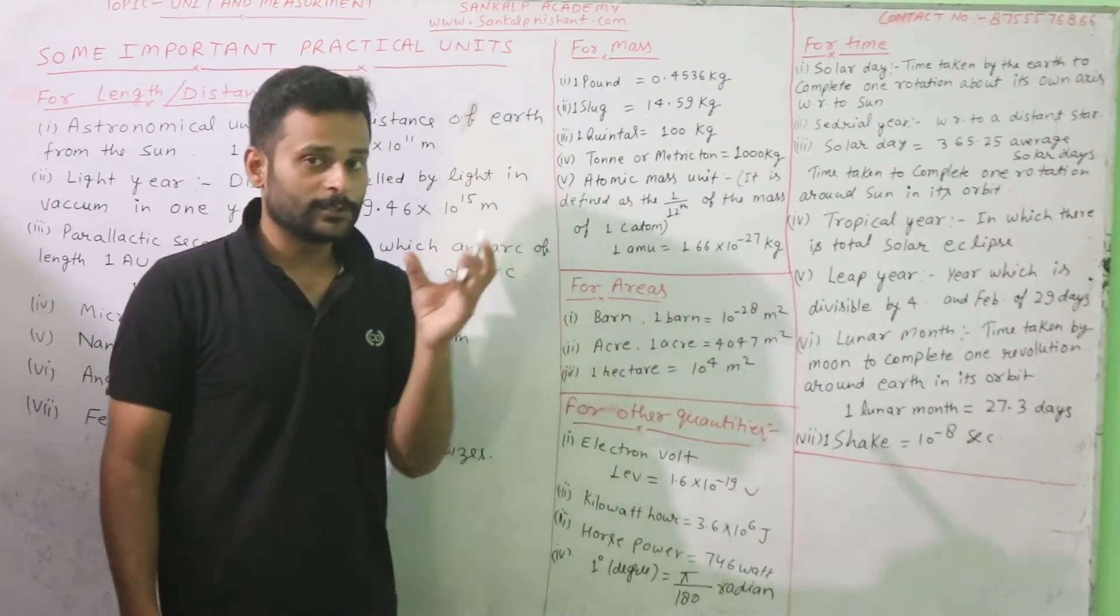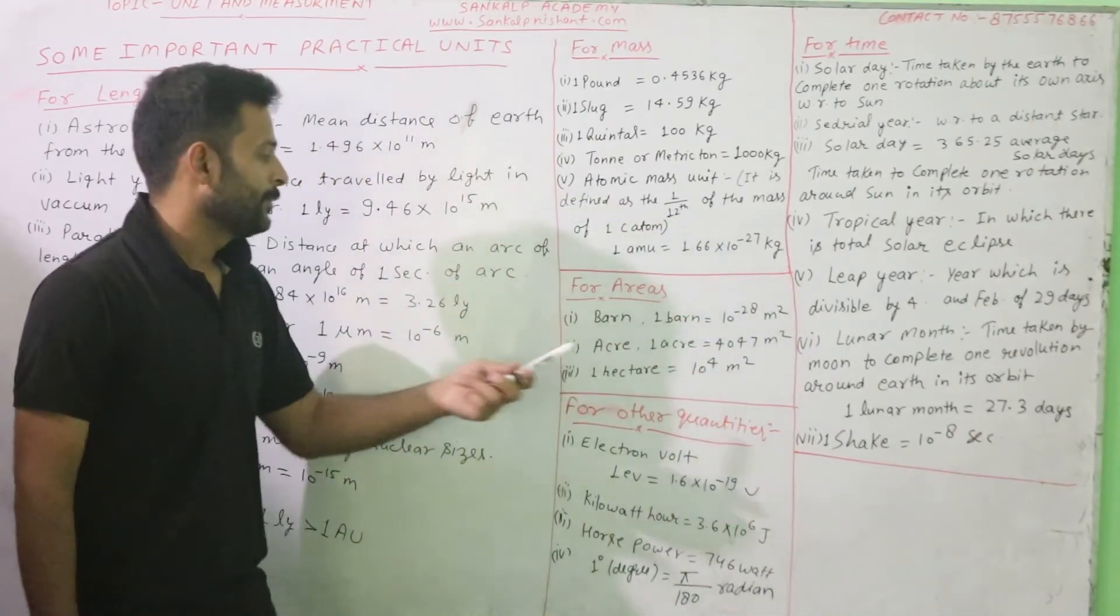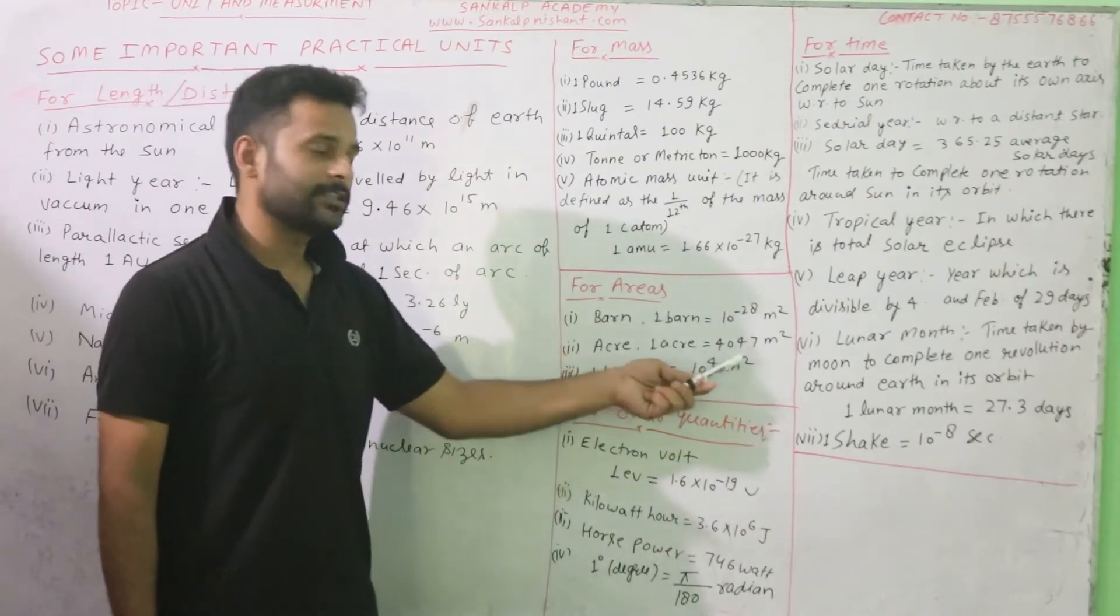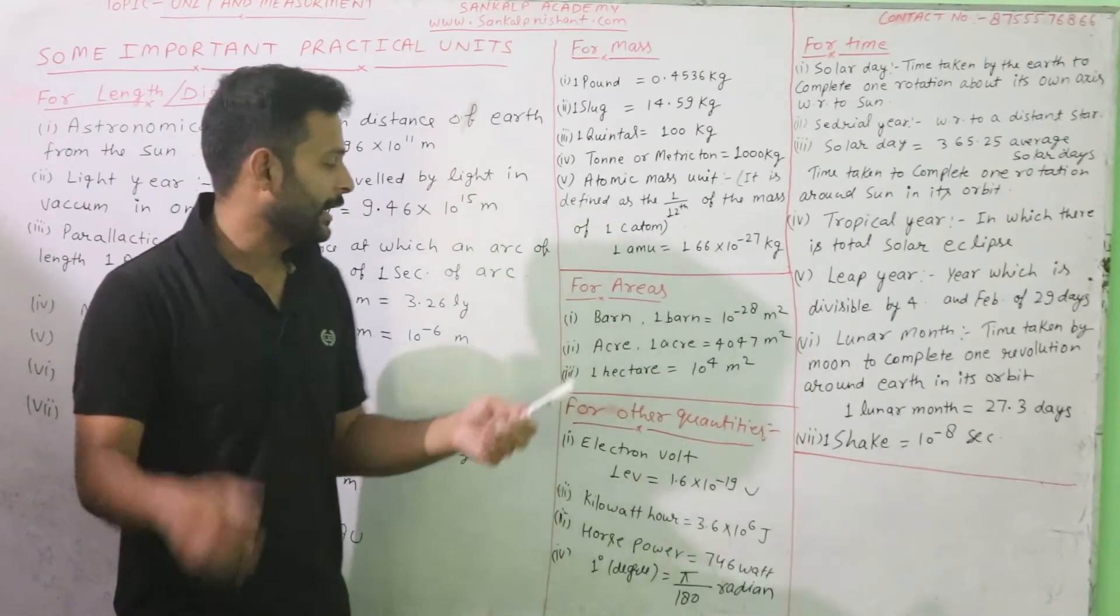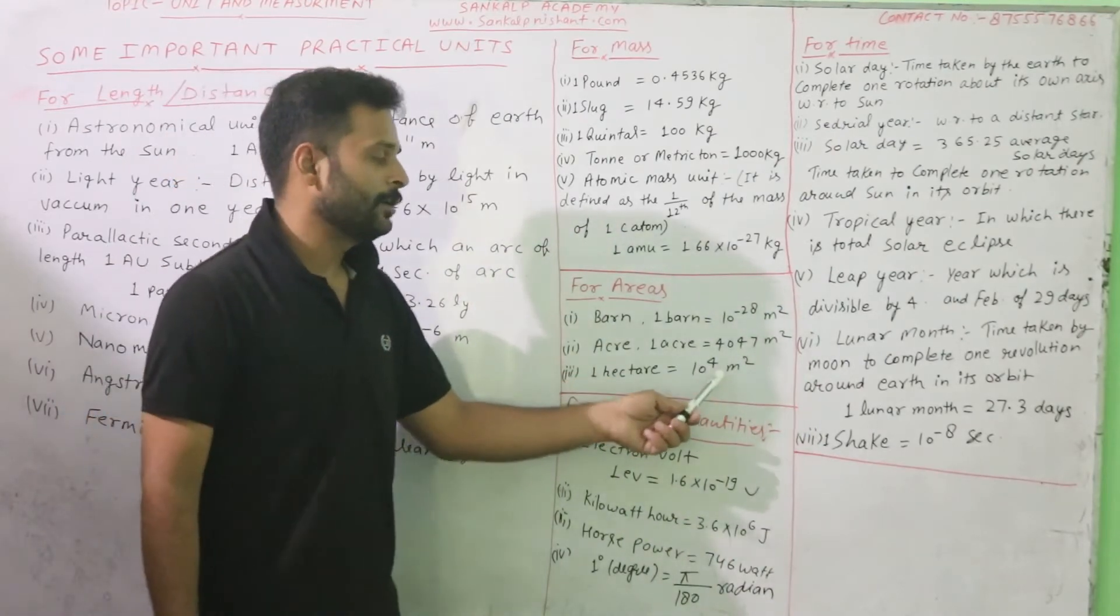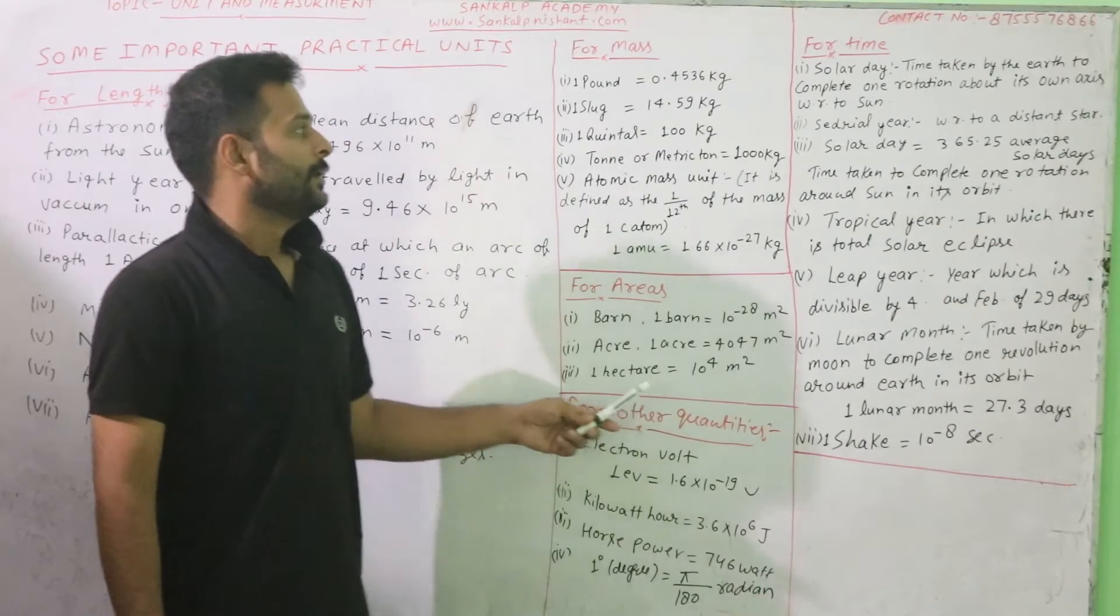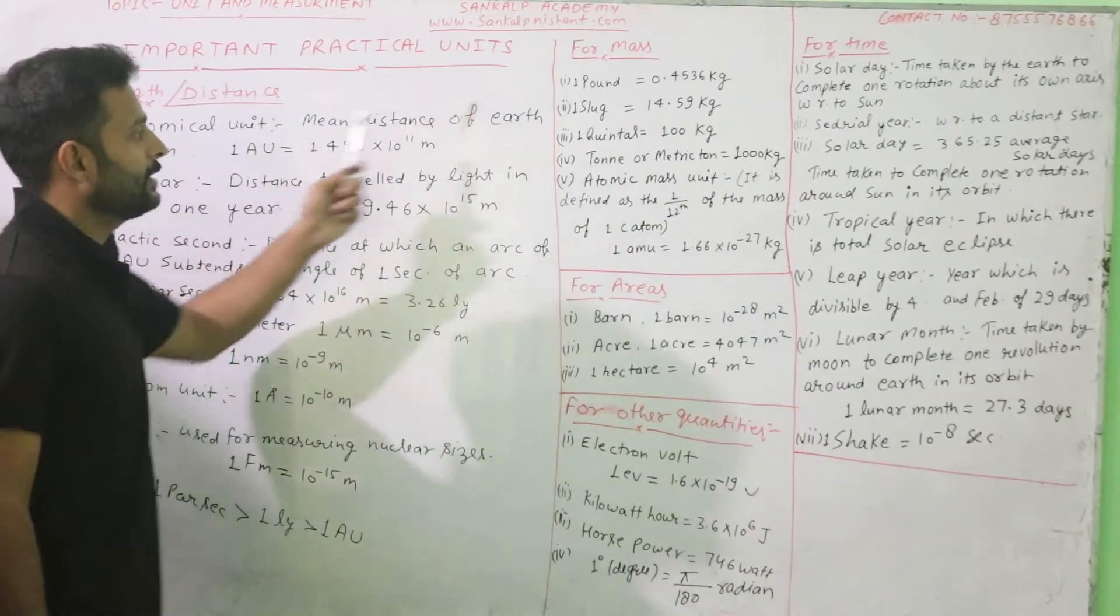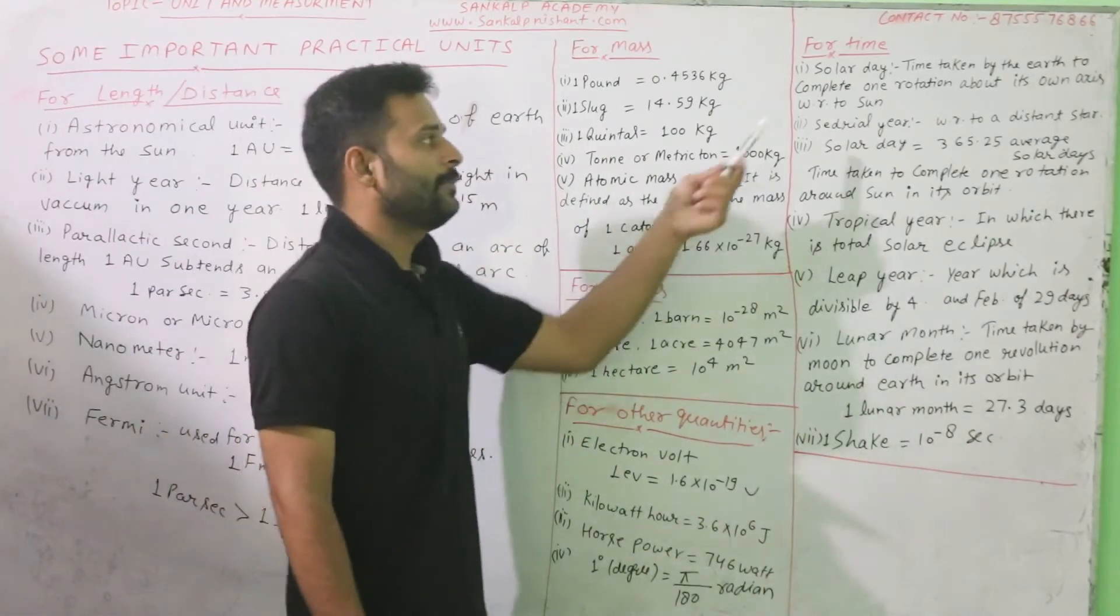For area, 1 acre equals to 4047 meters square. 1 acre is a large measurement. And 1 hectare is also a large measurement that is 10 to the 4 meter square. This is for the area and the area of the surface.